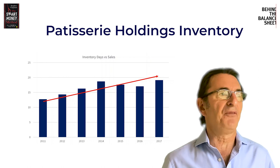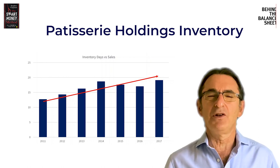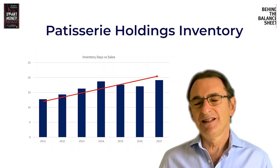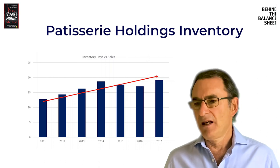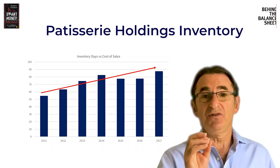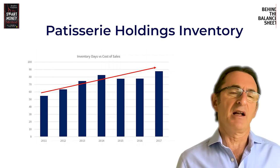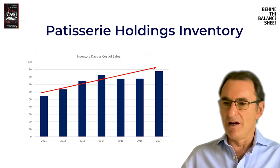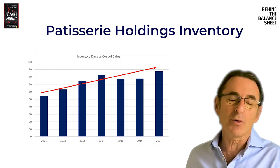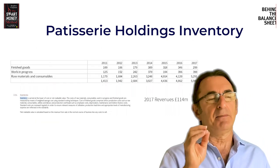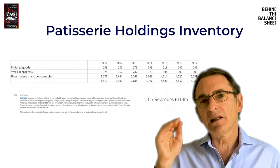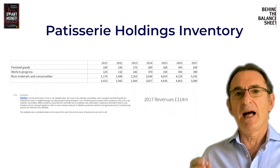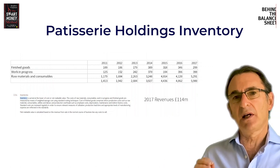Here's Patisserie Holdings. This is a famous fraud in the UK — it's a chain of coffee shops. This is the inventory days in terms of sales. It doesn't look that great. But if you look at the inventory days versus cost of sales, you can see that the numbers are much higher — 90 days. Now, this isn't because they own 90-day-old cakes or 90-day-old croissants. When you look at the Patisserie Holdings accounts, they very clearly delineate between finished products inventory and raw material inventory, and it's the raw materials and consumables number that's very large.